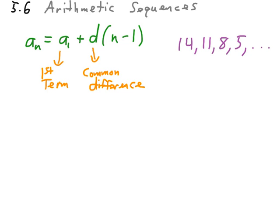With the sequence 14, 11, 8, and 5, and continuing on, we need to do a couple things. We need to be able to identify what is our a sub 1, and we also need to identify what our d, or our common difference is. So, a sub 1, the first term of the sequence, is 14.